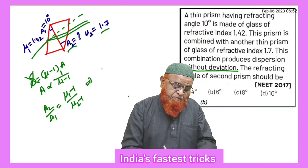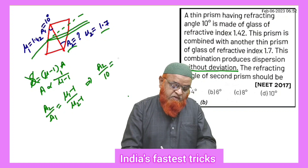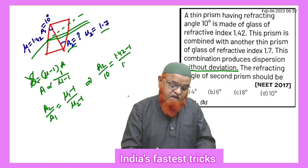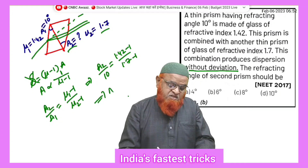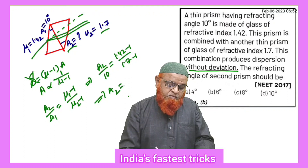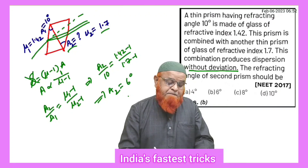Therefore A2 is what we have to find out. A1 is given as 10 degrees, (mu1 minus 1) is 1.42 minus 1, and (mu2 minus 1) is 1.7 minus 1. By simplifying and doing cross multiplication you get the value of A2 as 6 degrees.